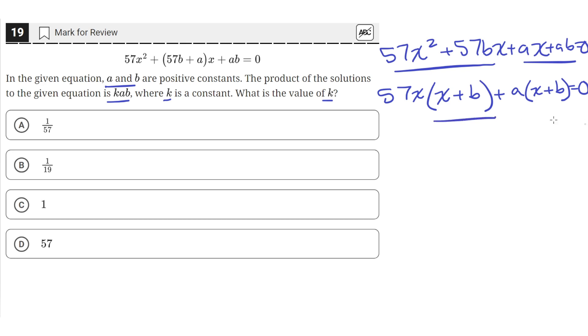So now this quantity (x + b) is common to both, so let's factor that out: (x + b)(57x + a).